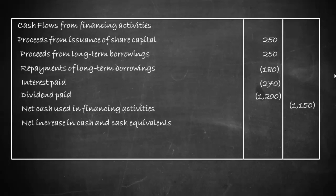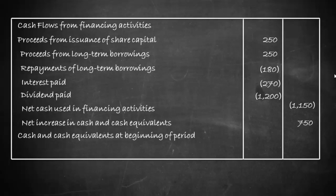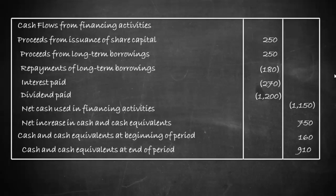Summing all three activities, the net increase in cash and cash equivalents is 750. Cash and cash equivalents at the beginning of the period is 160; cash generated during the year is 750; therefore cash and cash equivalents at the end of the period is 910. In this cash and cash equivalent figure we have also considered short-term investments.